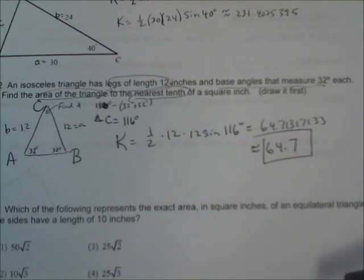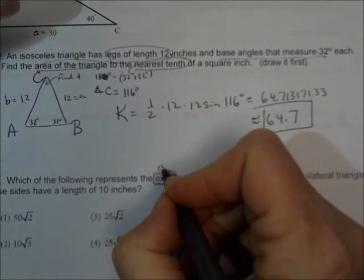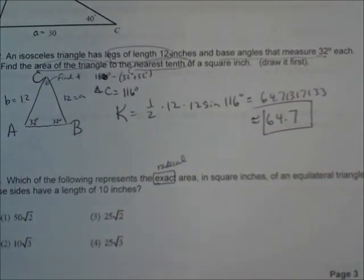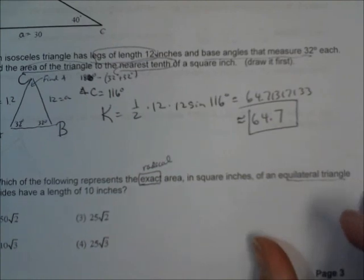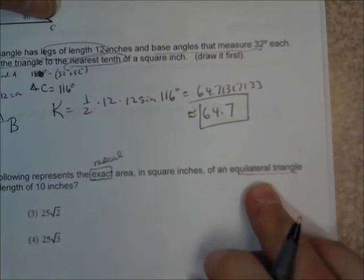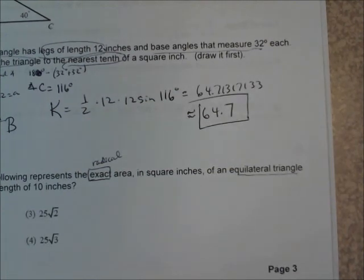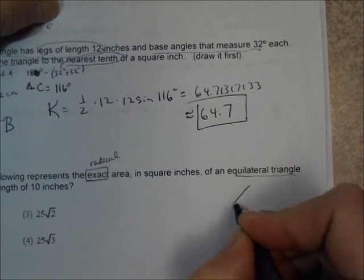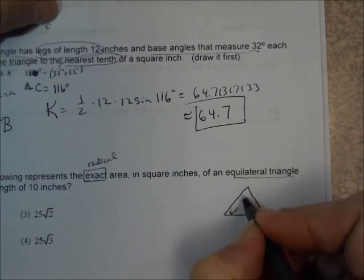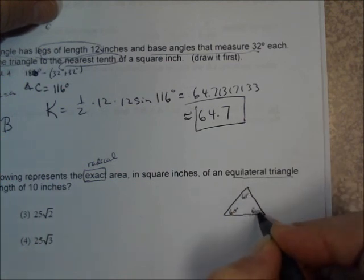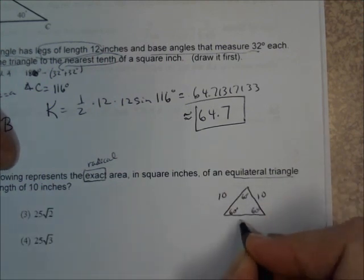The last question asks for the exact area. When you see 'exact,' that usually means it's going to be a radical, and you can see from the multiple choices that it is going to be a radical. So the exact area of an equilateral triangle — equilateral means all sides are equal and all angles are equal. We'll draw that equilateral triangle. All angles are 60 degrees, and each side has a length of 10 inches, so we can mark them all as 10 inches.